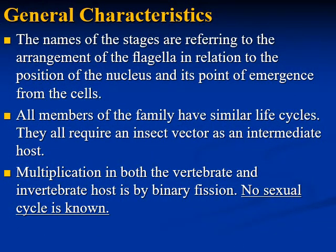The names of the stages refer to the arrangement of the flagella in relation to the position of the nucleus and its point of emergence from the cell. All members of this family have similar life cycles — they all require an insect vector as intermediate and vector host. Multiplication in both the vertebrate and invertebrate vector host is by binary fission. No sexual cycle is known.